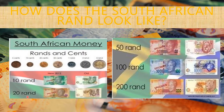The 20 Rand note is brown. It has Nelson Mandela on the front and it has elephants at the back. This is the old note.